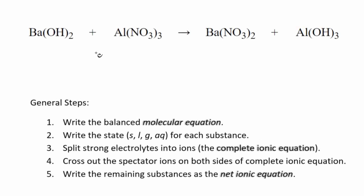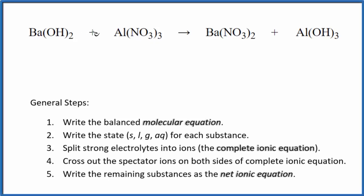In this video, we'll write the balanced net ionic equation for Ba(OH)2 plus Al(NO3)3. This is barium hydroxide plus aluminum nitrate.